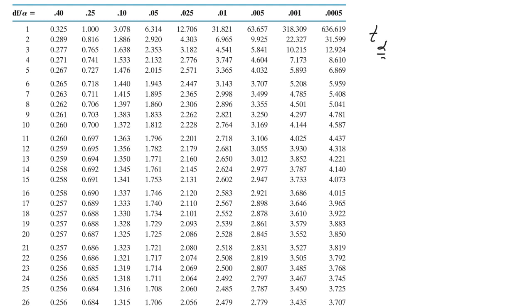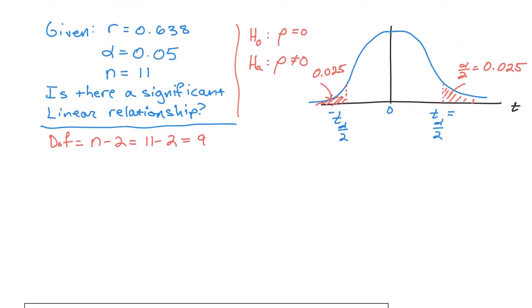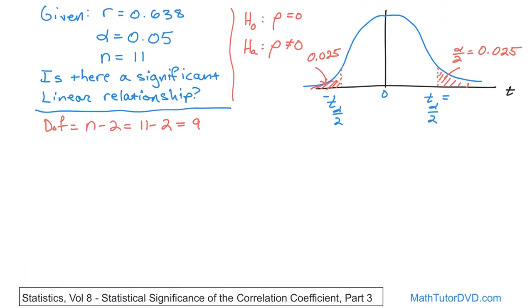So t alpha over 2 is 2.262. Just convince yourself of that. 0.025, 9, go over here, 2.262. So that's the cutoff value for my rejection region on the right-hand side. So when I go up here, t alpha over 2 is 2.262. So this is negative 2.262. It's not like the f distribution where you're asymmetric. Here you actually have a symmetric distribution. So the negative is the same as the positive value. It's just the negative version of it.